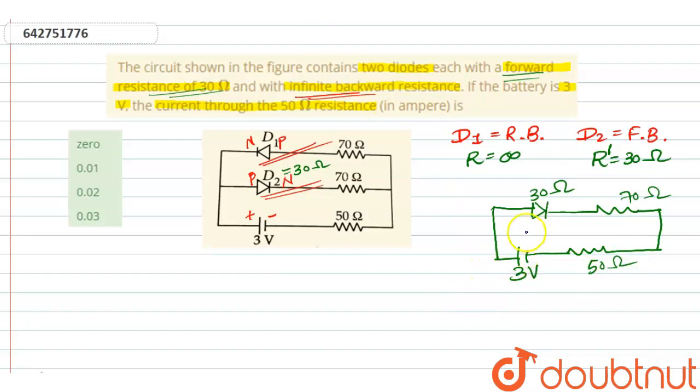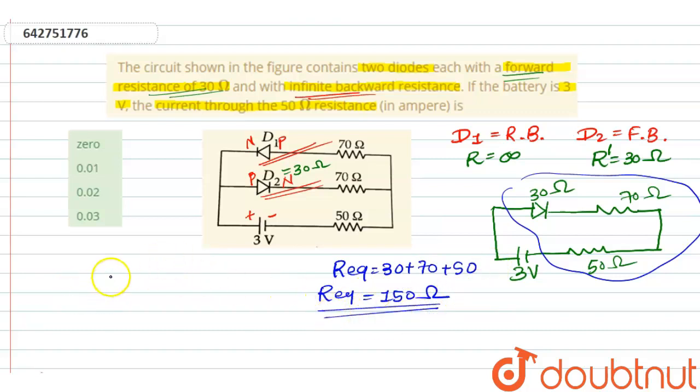Now, this all are connected in series, so R equivalent will be 30 plus 70 plus 50. So R equivalent is equal to 150 ohm. Now for finding current, I is equal to V by R. Here R equivalent, V is 3 divided by 150.